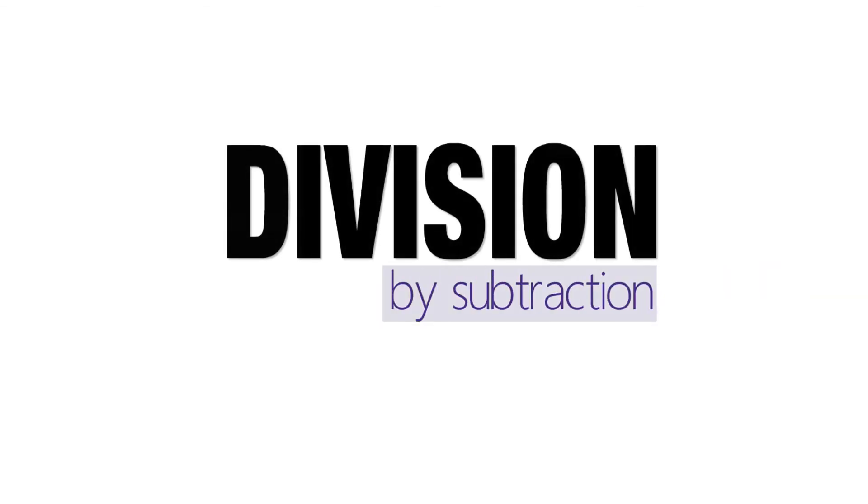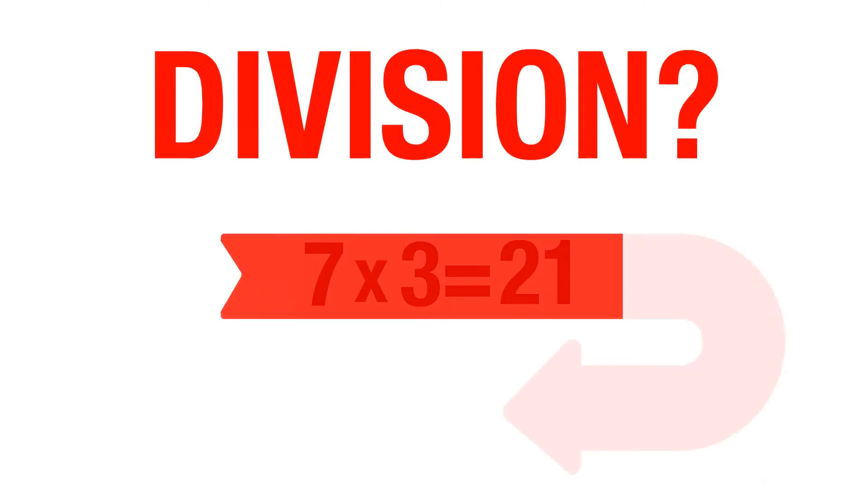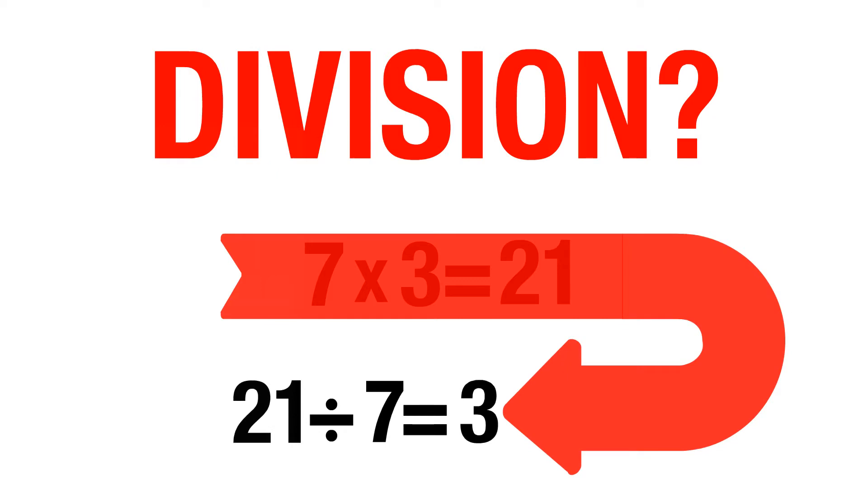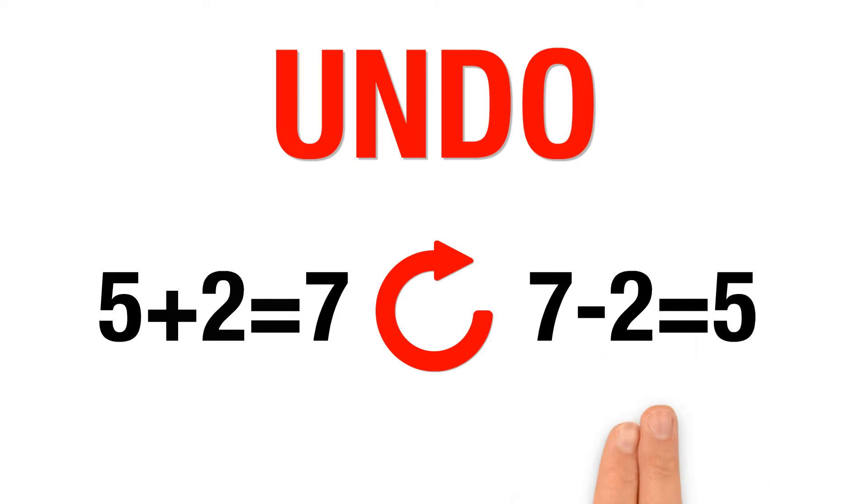Division by subtraction. What is division? Division is the opposite operation of multiplication. Opposite operations undo each other, such as addition and subtraction.